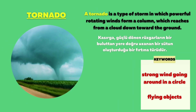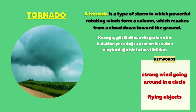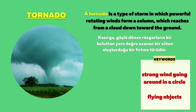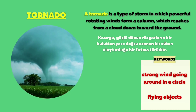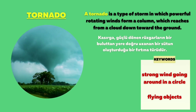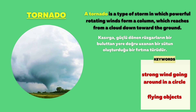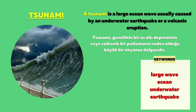Tornado: A tornado is a type of storm in which powerful rotating winds form a column, which reaches from a cloud down toward the ground. Tsunami: A tsunami is a large ocean wave, usually caused by an underwater earthquake or a volcanic eruption.